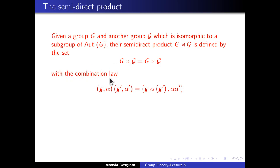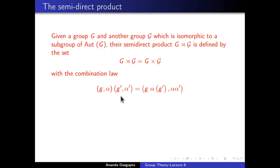Given two groups capital G and curly G like this, you can define their semi-direct product G ⋊ curly G. The underlying set is simply the Cartesian product, so an element of the semi-direct product is a pair with the first element from capital G and the second from curly G. The combination law distinguishes a semi-direct product from a direct product: if you multiply (g, α) and (g', α'), the elements of curly G compose among themselves to give α·α', but the capital G elements don't combine directly. Instead, α gets to act on g', giving α(g'), and that combines with g to give g·α(g').